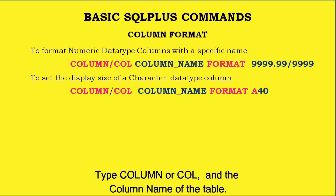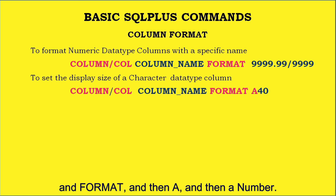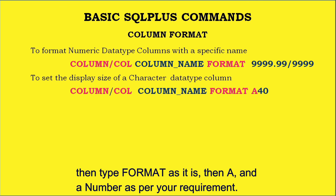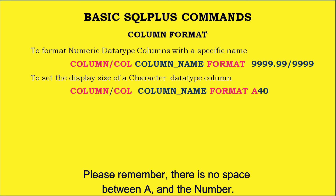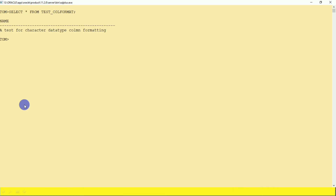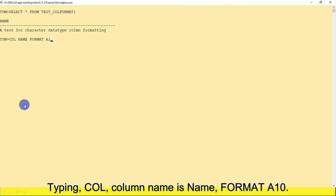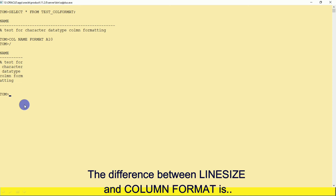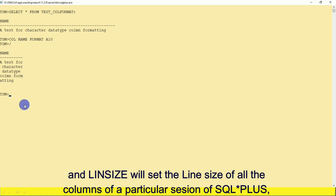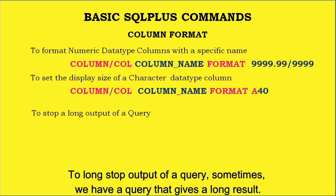To set the display size of a character data type column, type COLUMN (or COL), then the column name, then FORMAT, then A followed immediately by a number — remember there is no space between A and the number. For example: COL NAME FORMAT A10. Run the query and you can see the difference. The difference between line size and column format is: column format sets the format of a specific column called NAME for this session, while line size sets the width for all columns regardless of name.